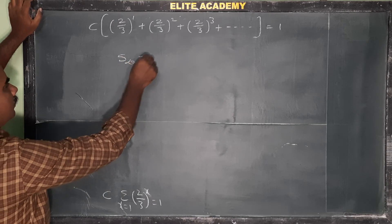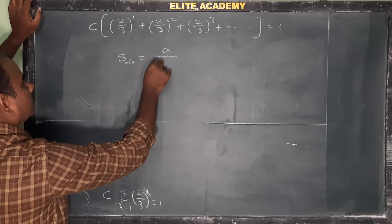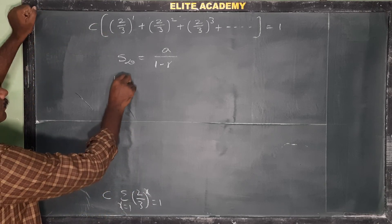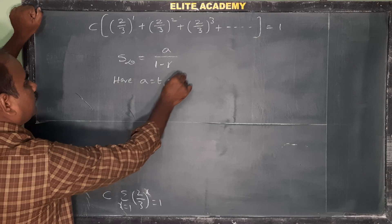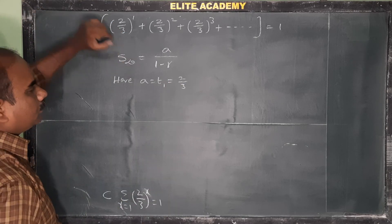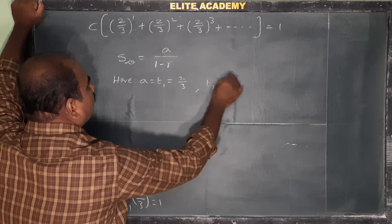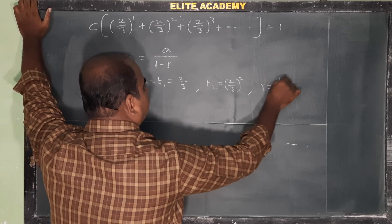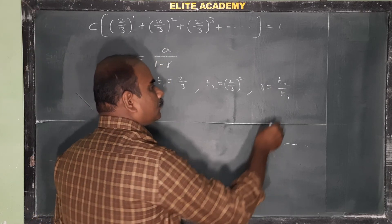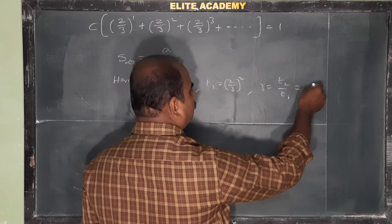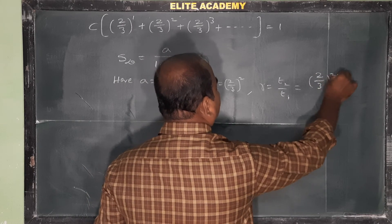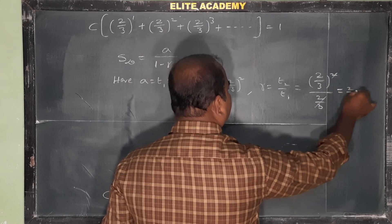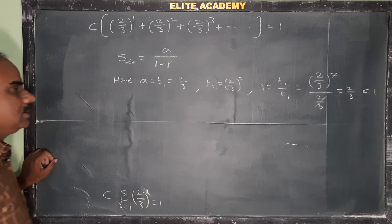For an infinite geometric progression, the sum formula is S∞ = a / (1 − r). Here, the first term a = t₁ = (2/3)^1 = 2/3, and the second term t₂ = (2/3)^2. The common ratio r = t₂/t₁ = (2/3)^2 / (2/3) = 2/3, which is less than 1, so the formula applies.